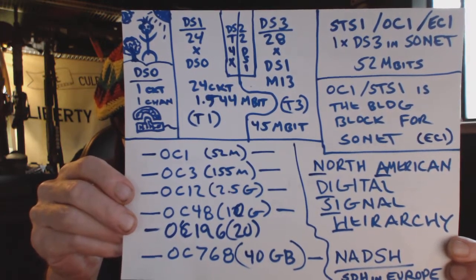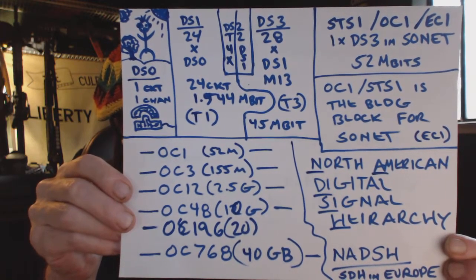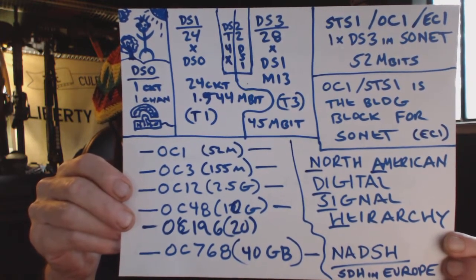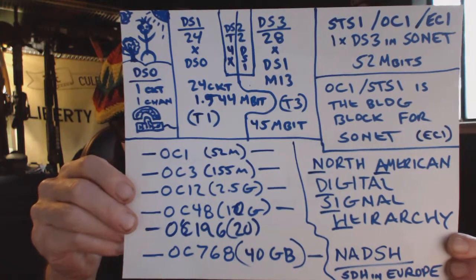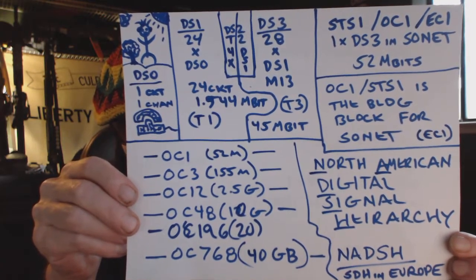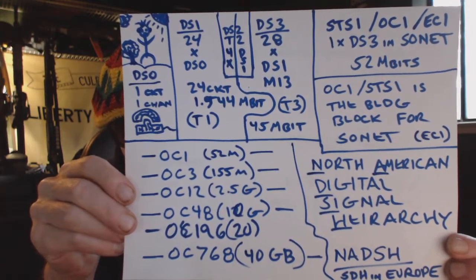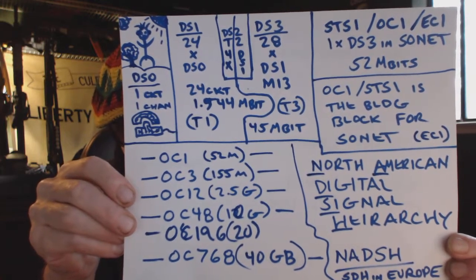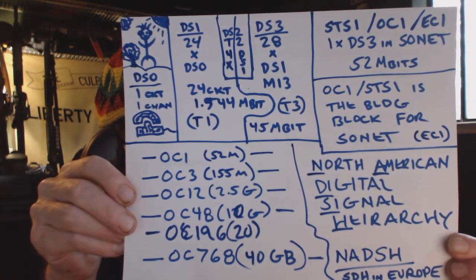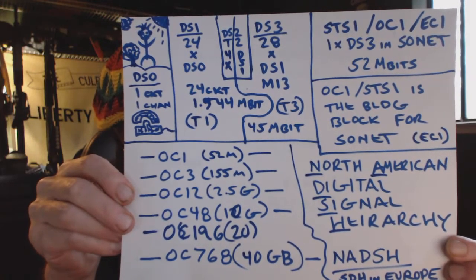Then we take that DS1 and input it along with 27 others into what's known as an M13 — that's a multiplexer, multiplex level one to multiplex level three. We take those 28 1.544 megabit DS1s and input them to the front end of the M13.